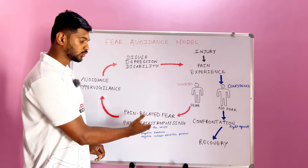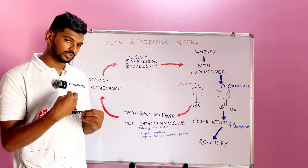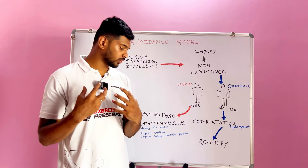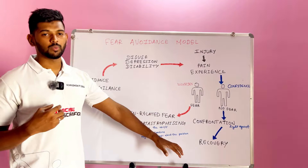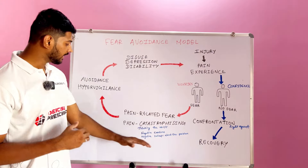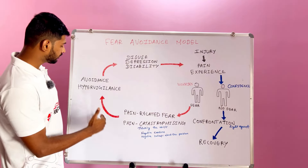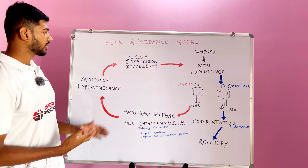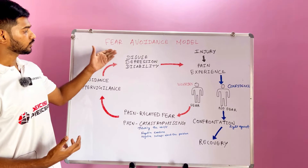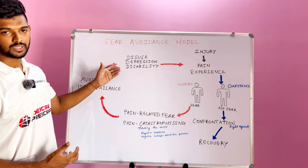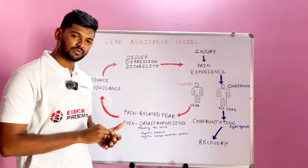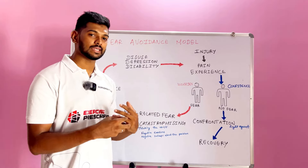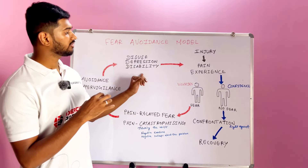They develop pain catastrophizing — thinking the worst — along with negative emotions and negative beliefs toward the problem. This develops highly and ends up leading to avoidance of movement and hypervigilance behavior. It leads to disuse, depression, and disability, reducing quality of life, muscle efficacy, range of motion, and many other things.